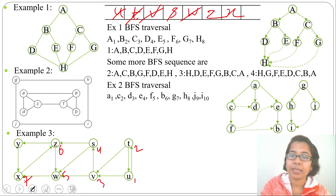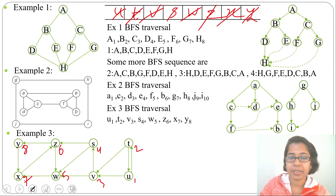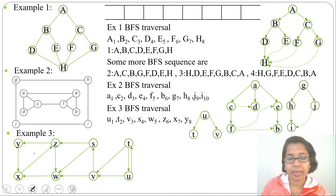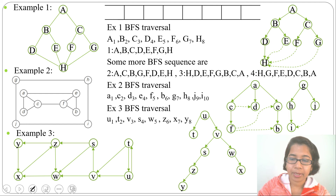Z's adjacent is Y — we insert Y, delete Z, and write number 8. X's adjacents are all already visited so we delete X. The BFS sequence is: U, T, V, S, W, Z, X, Y. Now let's construct the BFS tree. From U we visited T and V — so T and V are U's children. From V we visited S and W — so S and W are V's children. From S we visited Z — Z is S's child. From W we visited X — X is W's child. From Z we visited Y — Y is Z's child.